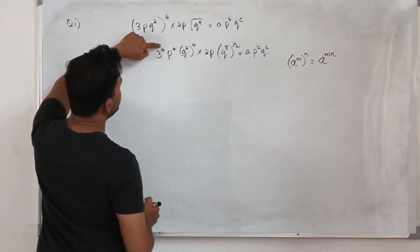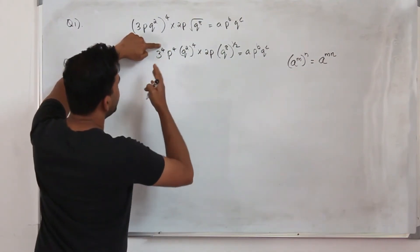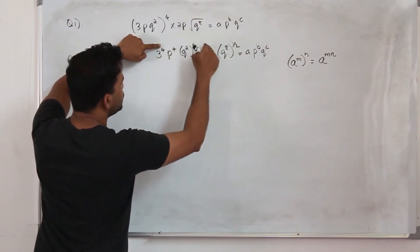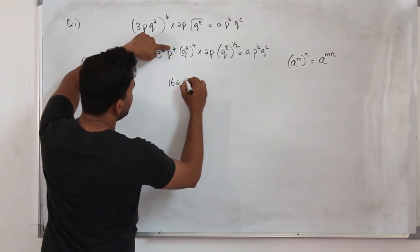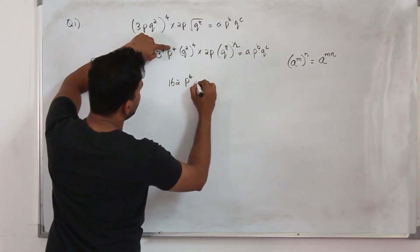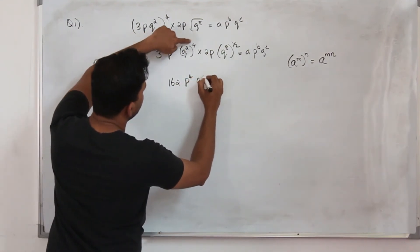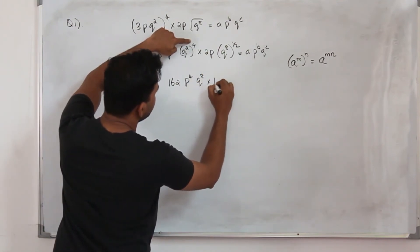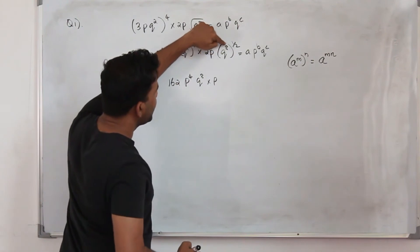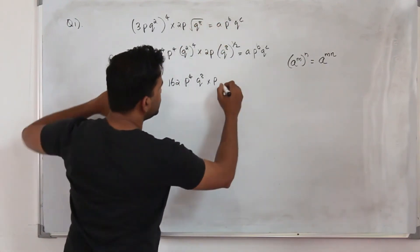Here 3⁴ is, 3 squared is 9, so 81 times 2, which is 162. And we have p⁴, q to the power 2 times 4 is 8. And then we have p here, q to the power 8 times half is 8 upon 2, which is 4.